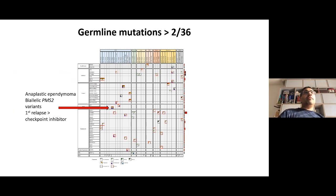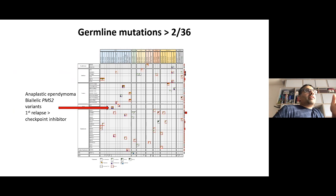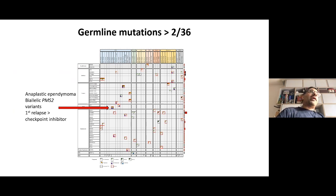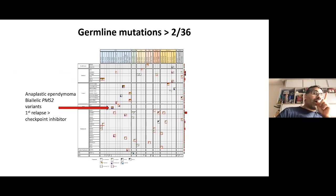In the germline, in two children we found something we didn't know before. There were children with germline mutations we already knew about — Beckwith-Wiedemann, IGF2 and so forth — but there were a couple of kids with unexpected findings. In one child we found biallelic PMS2 pathogenic mutations in the germline — a complete game changer, not previously known to exist in ependymoma, not something we would have ever looked for. We found this, and crucially we had the data back before their first relapse. We then started treating with a checkpoint inhibitor, and they are still doing wonderfully well on a checkpoint inhibitor in a tumour that is otherwise incurable.